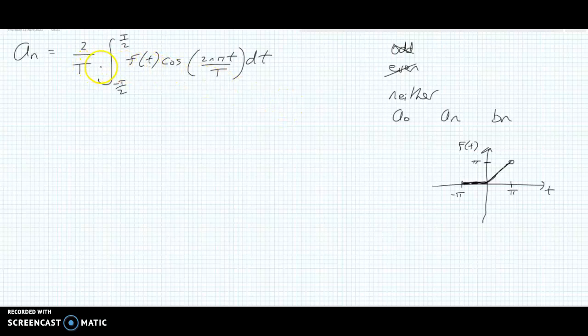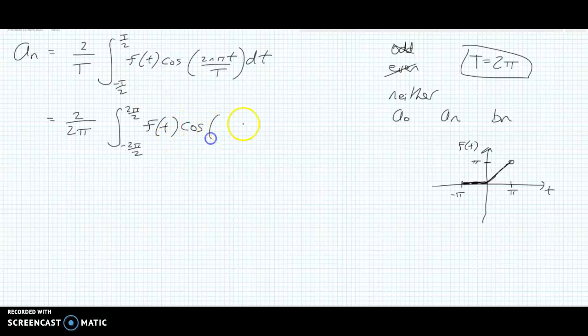So this is a formula from the back of the exam paper, and there's two versions, and this is the one to use. We know that the period from part A was 2π, we were told this, so we can sub in 2π here, and we get 2 over 2π, and our limits become 2π over 2, minus 2π over 2. We keep our f(t) here, and we have cosine of 2nπt over T.